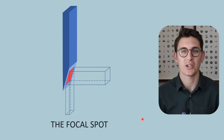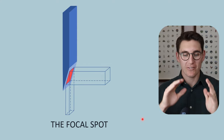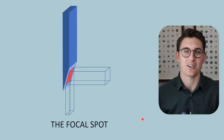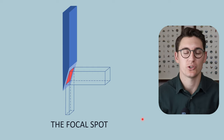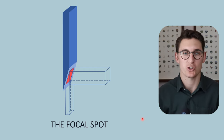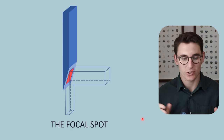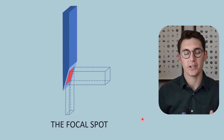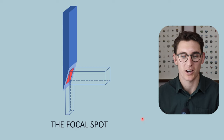As mentioned in the previous talk when looking at the anode, changing the anode angle will have a significant effect on both our effective focal spot as well as our field size, and consequently the resolution of our image. This all falls under the category of x-ray beam geometry, and I want to dive a little further into the geometry of the x-ray beam to show how we can change certain parameters to get the geometry we want for our patient.